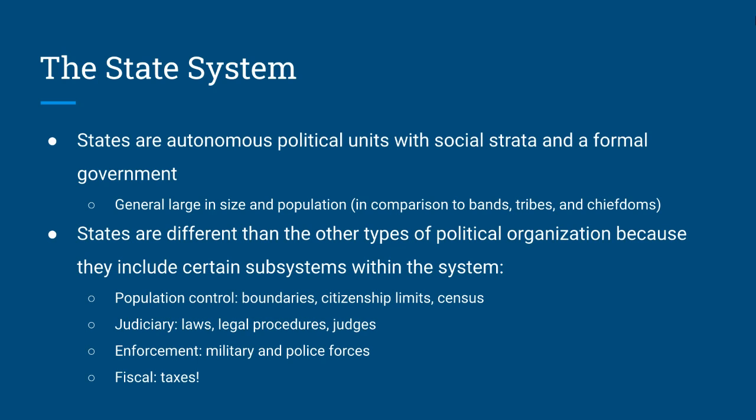States have population control, which includes forming boundaries for your country, citizenship limits, and they do a census every once in a while. In America we do it every 10 years, where you record how many people live where, what their income is, things like that. We also have judiciary, which covers laws, legal procedures, judges, and enforcement of laws.